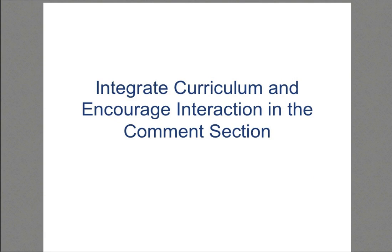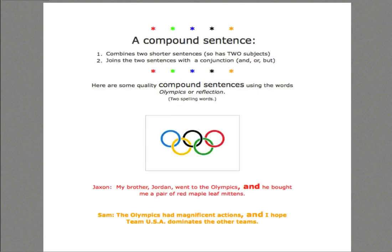Now I'm going to switch gears and go through some ways that I integrate curriculum into the blog and how I look for opportunities to make posts or comment sections interactive and interesting. This is one I did about compound sentences — it has the definition of what a compound sentence is, and below the Olympic flag there are student-generated compound sentences we wrote. I usually wrap these kinds of language lessons around a current event like the Olympics. The comment section ends up filled with information about that current event — medal counts, the games. It's a great way to teach a specific lesson while also giving you a chance to talk about current events.